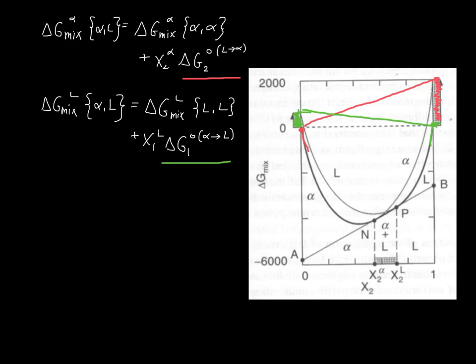This is how and why we need to be careful with our reference states, because if the curves were shifted incorrectly, the common tangent construction wouldn't accurately represent the distribution of phases and the equilibrium compositions of those phases.